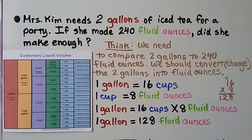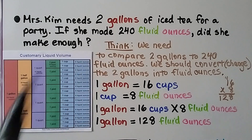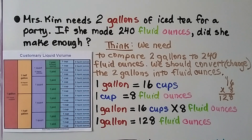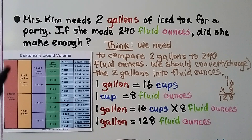Mrs. Kim needs two gallons of iced tea for a party. If she made 240 fluid ounces, did she make enough? We need to compare two gallons to 240 fluid ounces, so we should convert — that means change — the two gallons into fluid ounces so we're comparing fluid ounces to fluid ounces.